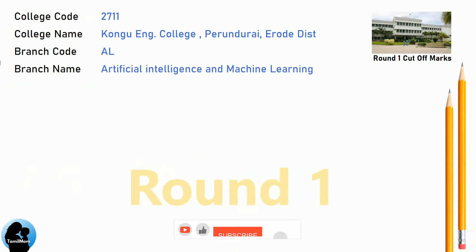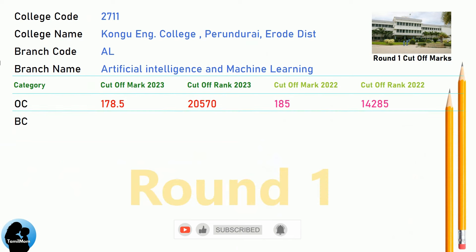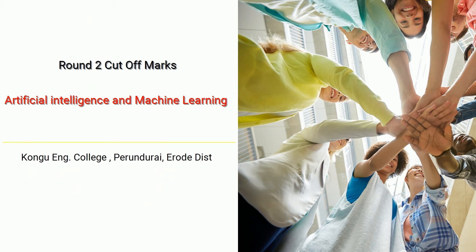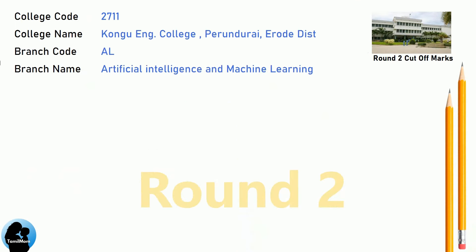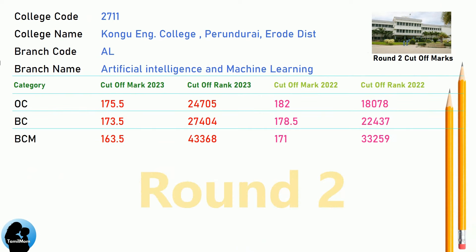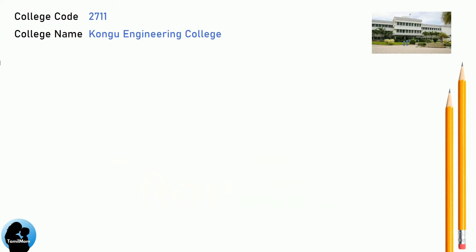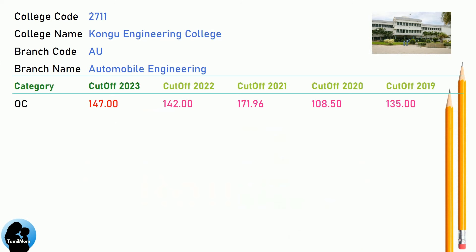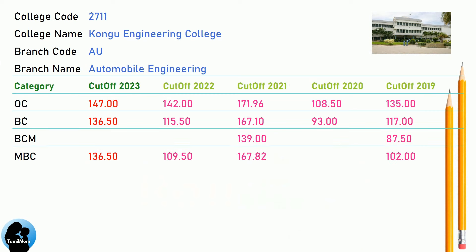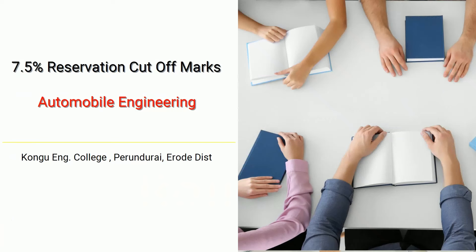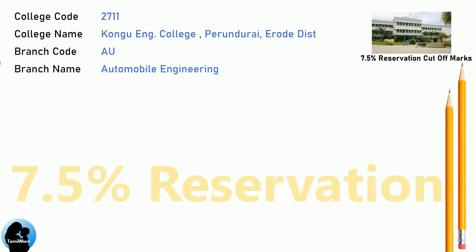DNA Cut-Off for Kongu Engineering College in Artificial Intelligence and Machine Learning. DNA Round 2 Cut-Off for Kongu Engineering College in Artificial Intelligence and Machine Learning. DNA Cut-Off for Kongu Engineering College in Automobile Engineering. DNA 7.5 Reservation Cut-Off for Kongu Engineering College in Automobile Engineering.